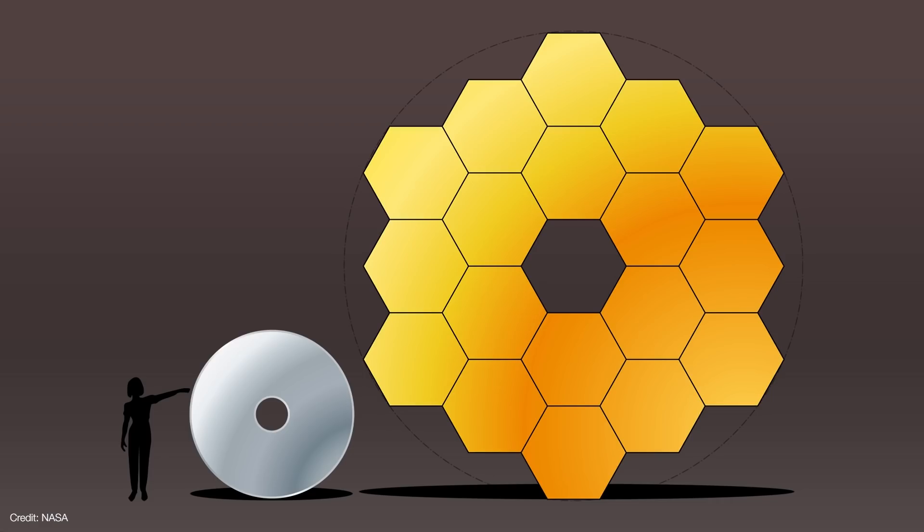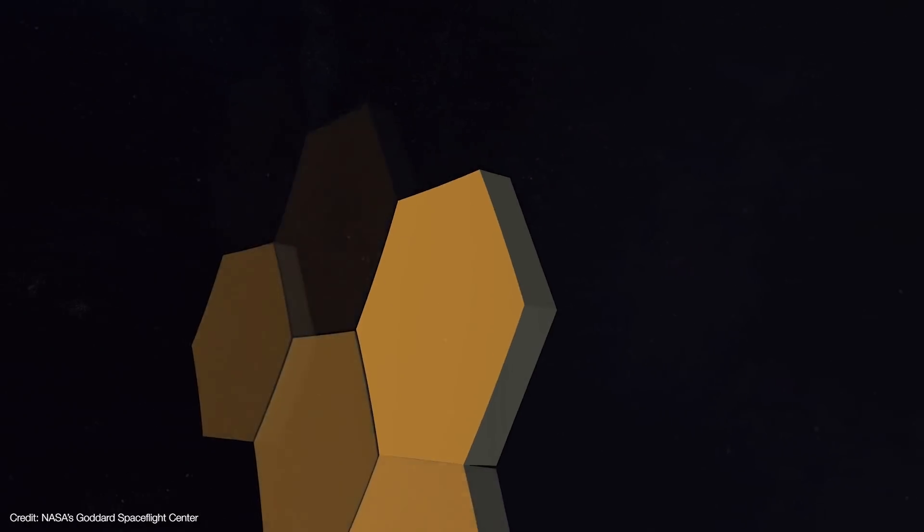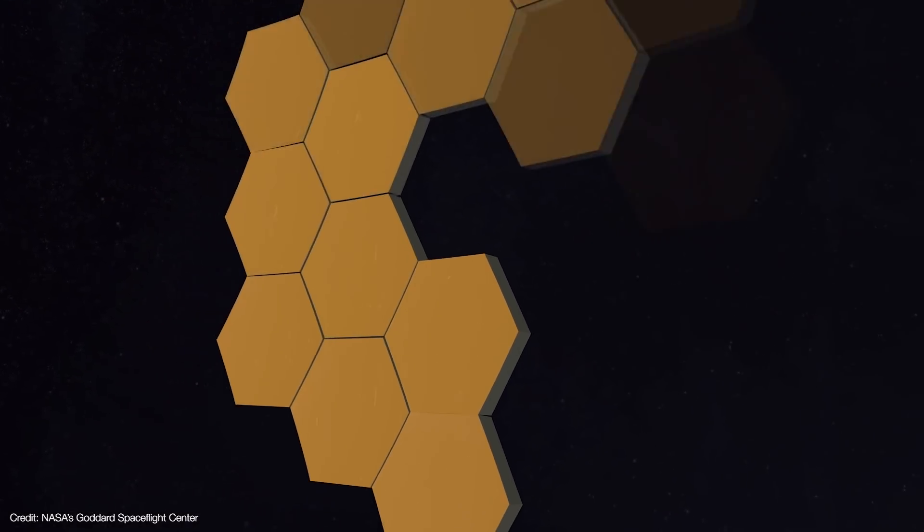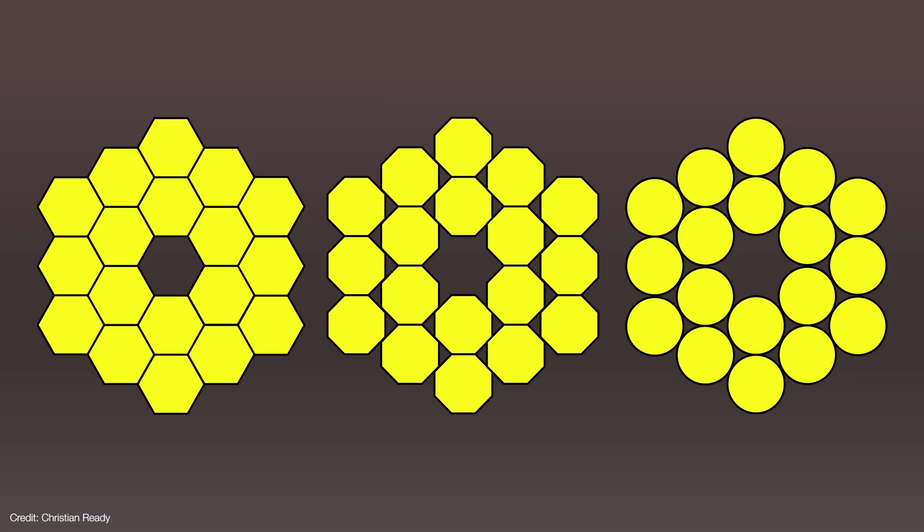Well, hexagons combine into a roughly circular shape, which is what you'd want when you're trying to concentrate light into a central point. Another advantage of hexagons is that they have what's called a high filling factor. And this means the segments fit together without gaps. If Webb used octagonal or even circular mirrors, there would necessarily be gaps in between them, which means the mirror doesn't collect as much light.